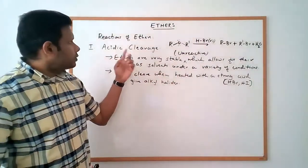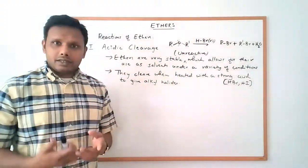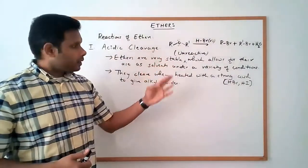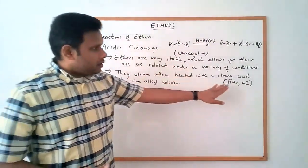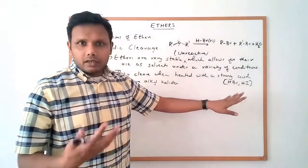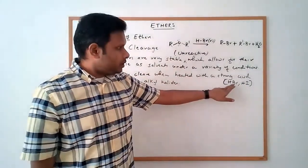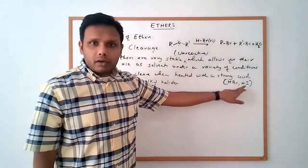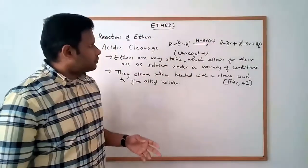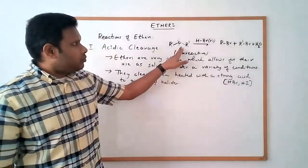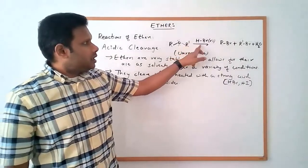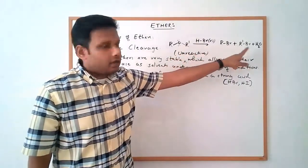One reaction we're going to talk about here is the acidic cleavage of ethers. This reaction happens at a significant rate with HBr and HI, so you need a very strong acid for this reaction. What happens is the ether cleaves and it becomes the alkyl halide.